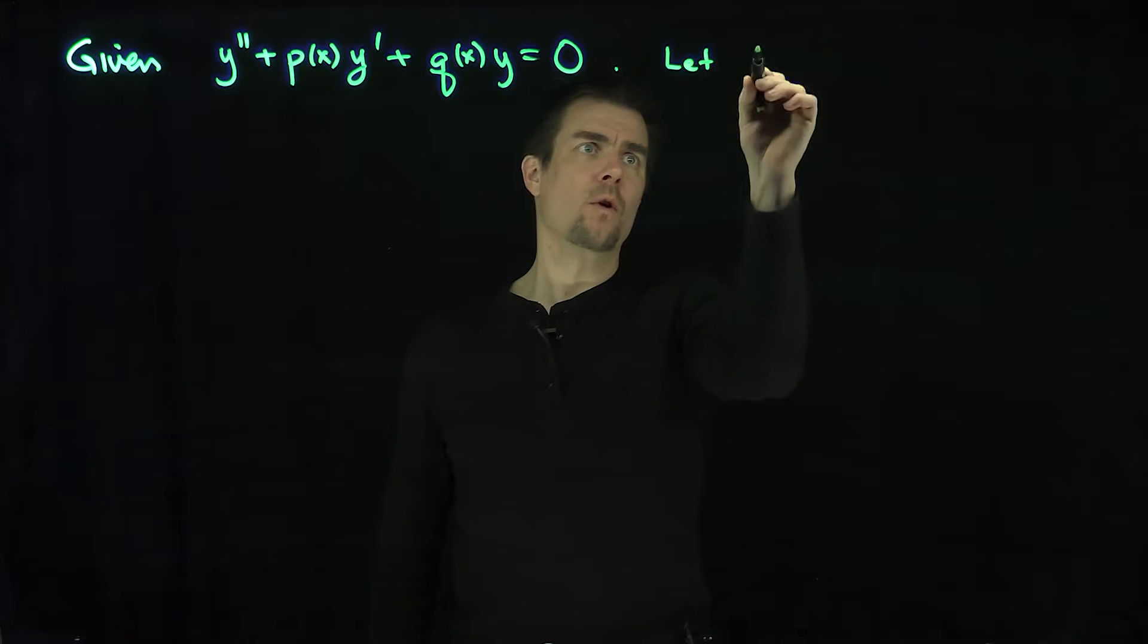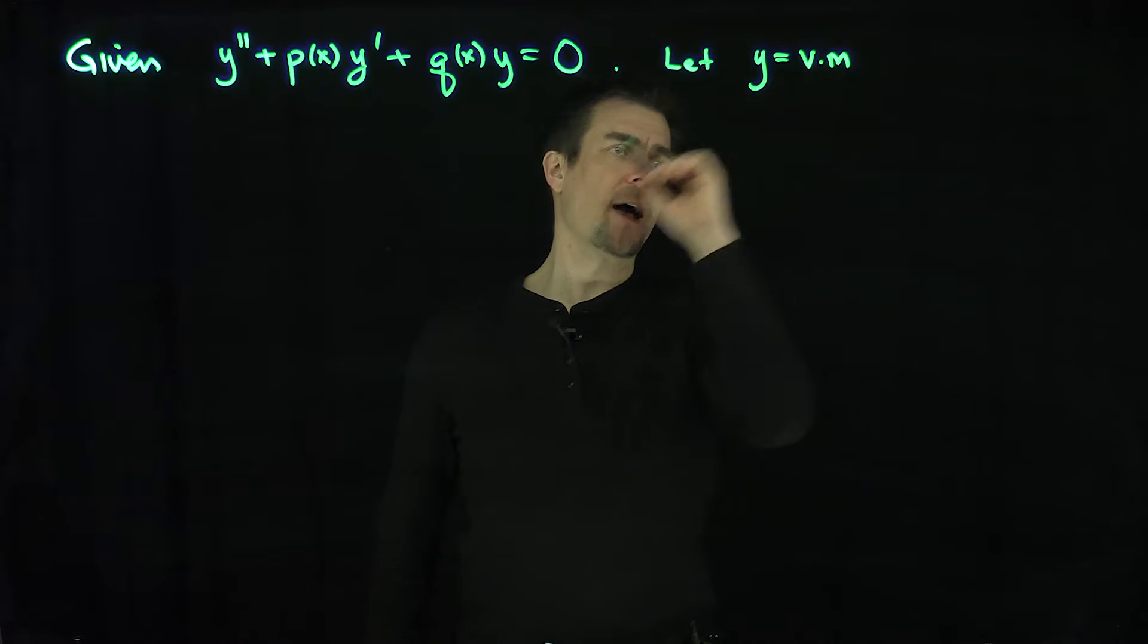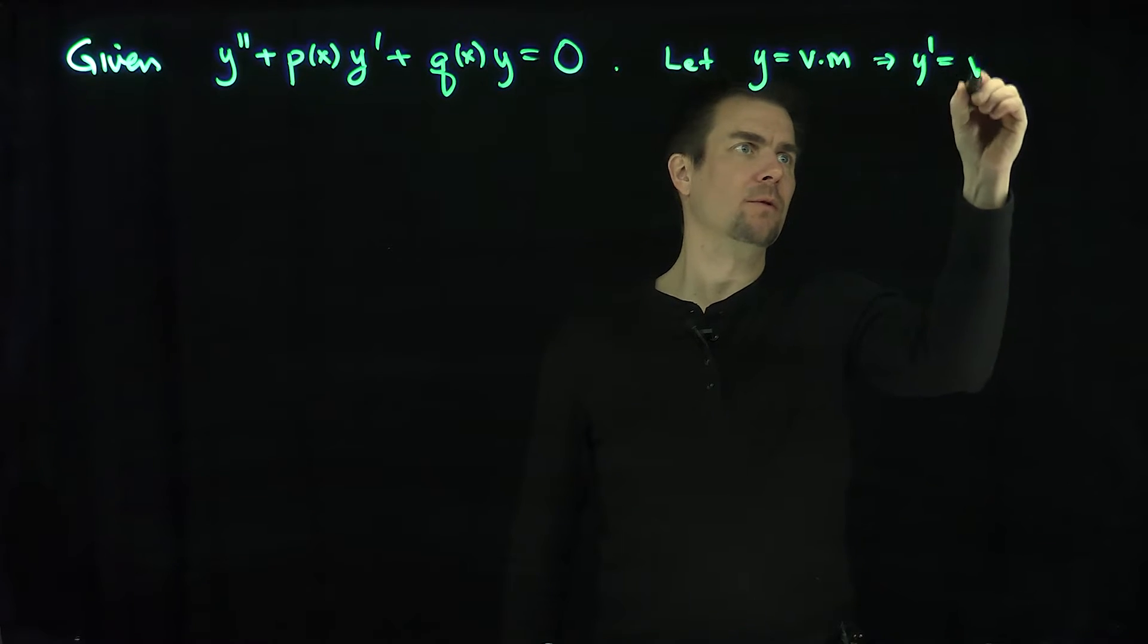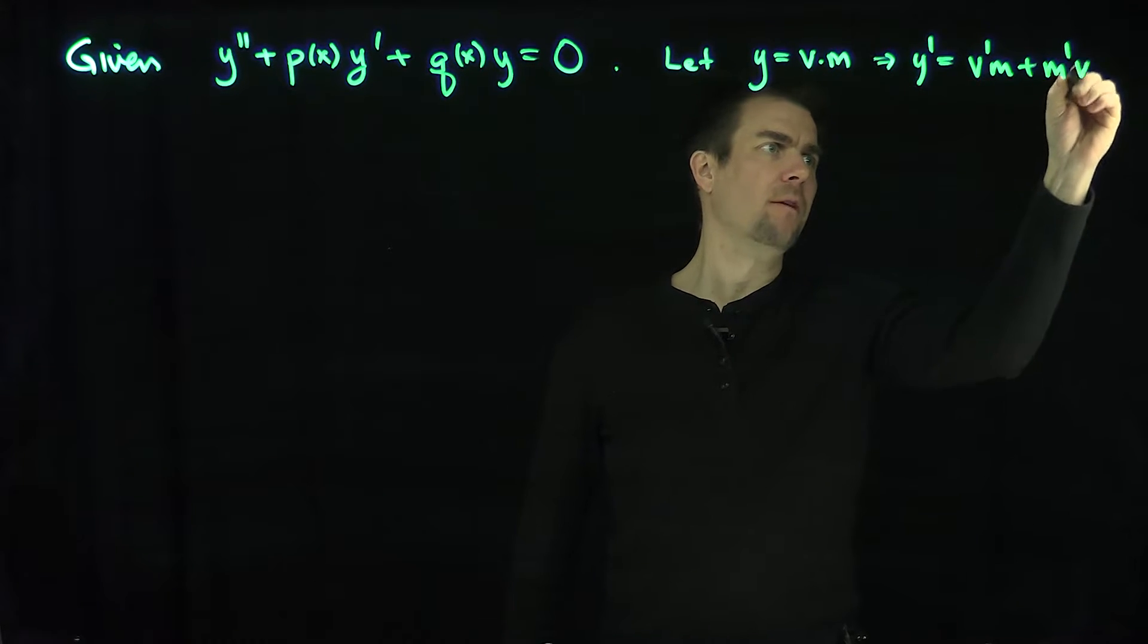I'm going to let y be v times m. Then this implies, of course, that y prime is equal to v prime m plus m prime v.